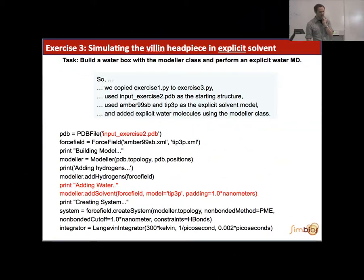Just let's see if we all have the same thing in our Python files. So, we copied exercise one into exercise three. We used exercise2.pdb as a starting structure. And we stuck with the force field 99SB and TIP3P as the explicit model. And then we added the water box with a padding of one nanometer to it. And so this is what your input file should look like. If you haven't gotten it to run, make sure that you actually created the modeler object. And then you add not only the hydrogens, but also the solvent where you specify what type of water molecules and what your padding is.